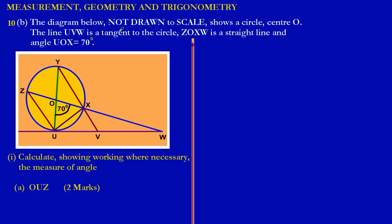The diagram below, not drawn to scale, shows a circle with center O. The line UVW is a tangent to the circle. A tangent simply means that the line only touches the circumference at a single point. If you notice, it only touches the circumference at point U. That's what it means by a tangent.